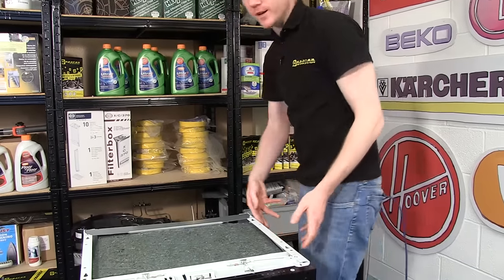So there we have it, one new drain hose fitted to the dishwasher. Drain hoses and all other parts for dishwashers and other appliances can be found on the eSpares.co.uk website. Thanks for watching.